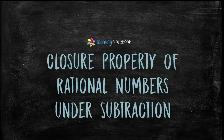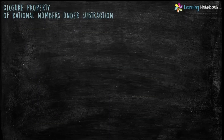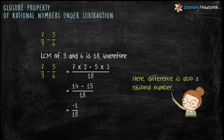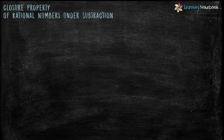Now let's see closure property of rational numbers under subtraction. Let's take an example: subtract 5 by 6 from 7 by 9. LCM of 9 and 6 is 18. Therefore we get 7 into 2 minus 5 into 3 by 18, which is equal to 14 minus 15 by 18. The difference comes out to be minus 1 by 18, which is a rational number.